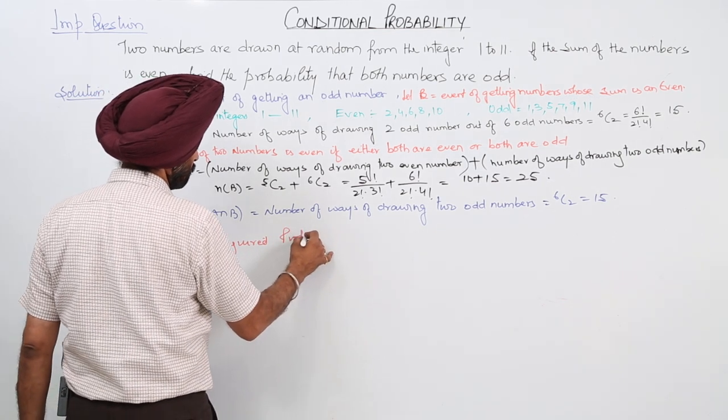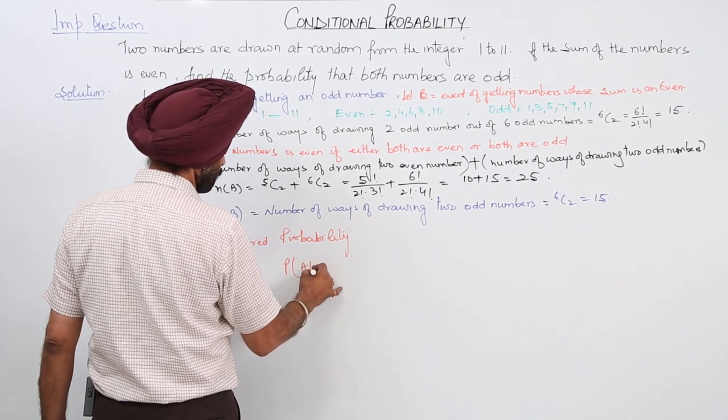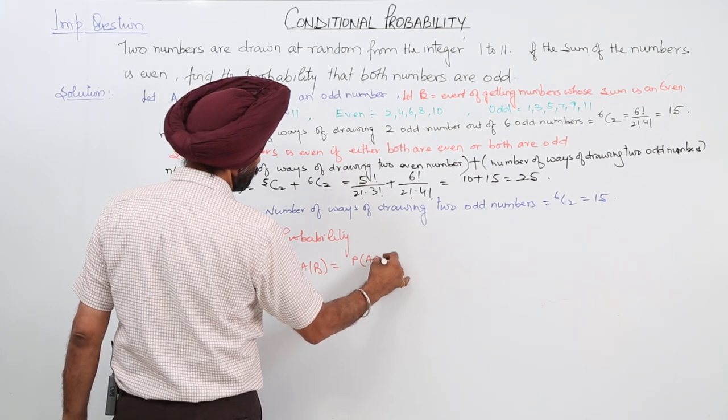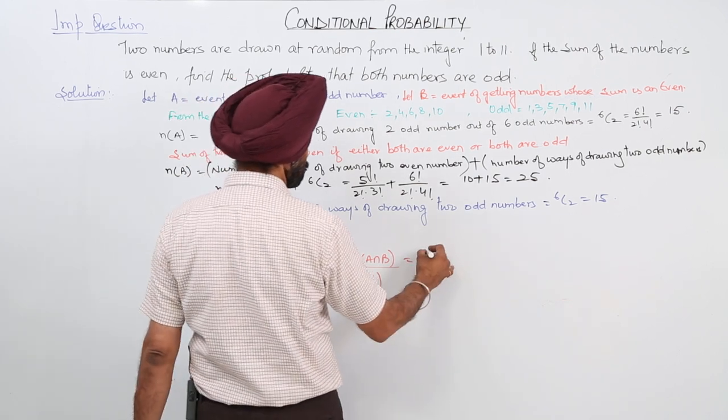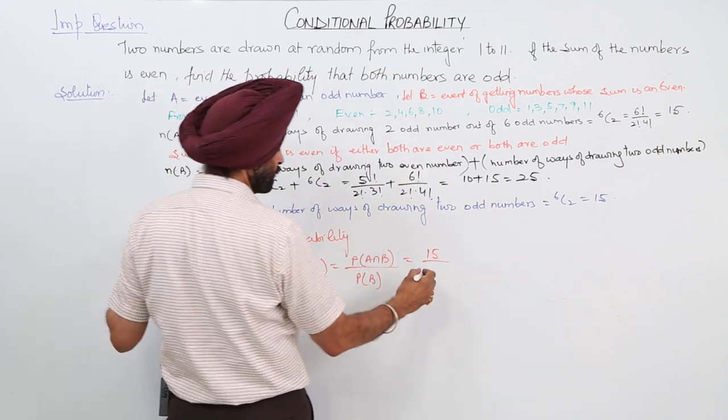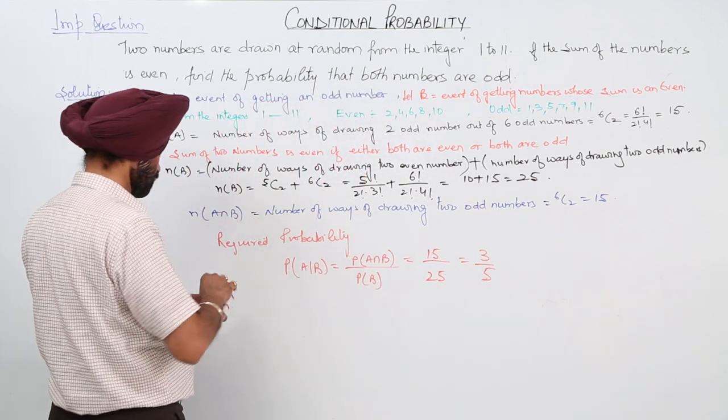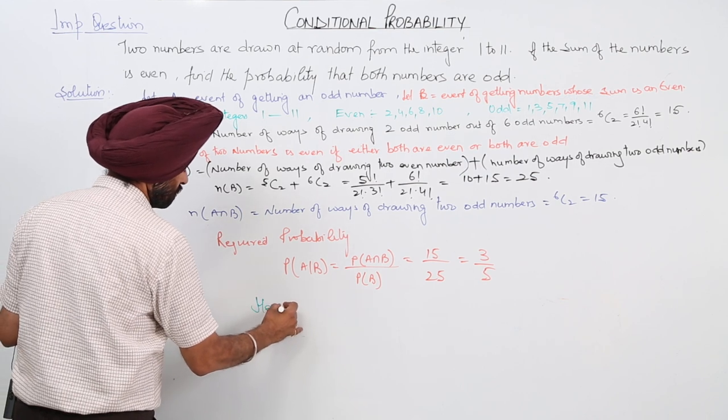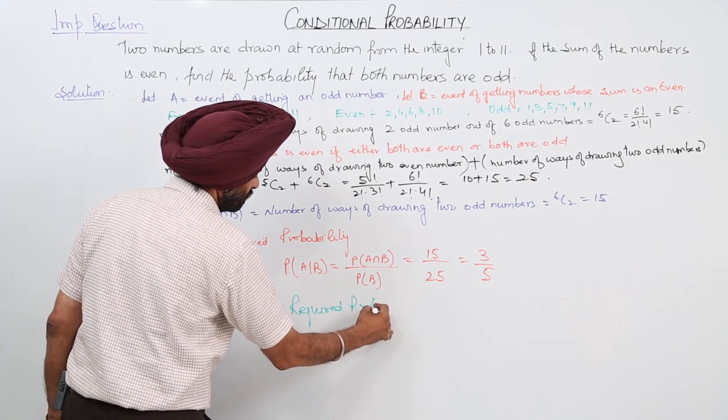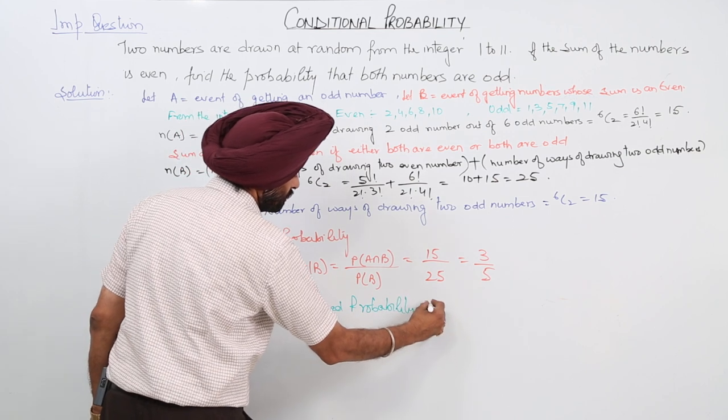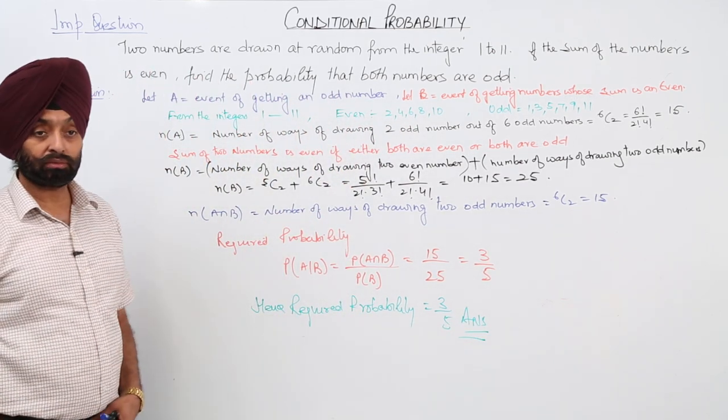Required probability P(A|B), so P(A|B) is equal to probability of A and B upon probability of B. Now this is equal to 15 for A and B and probability of B is 25, which equals 3 by 5. Hence required probability is equal to 3 by 5.